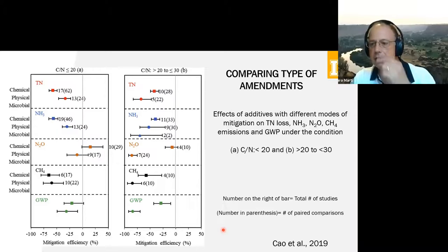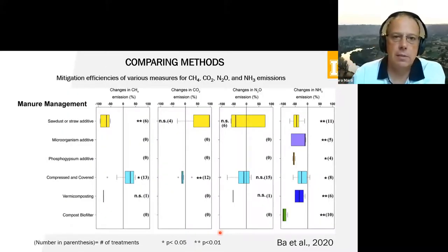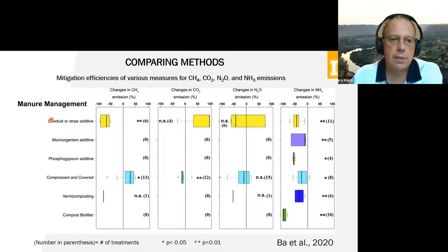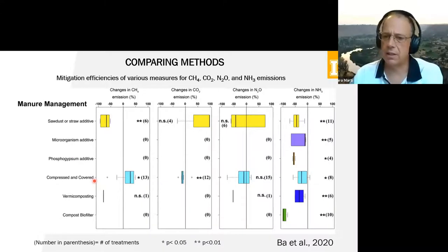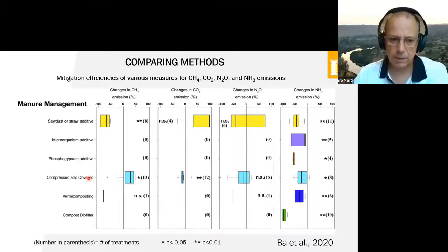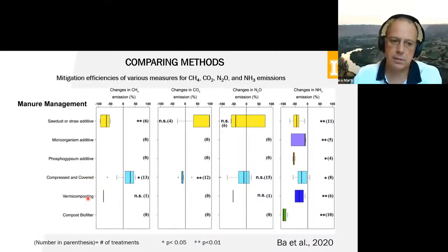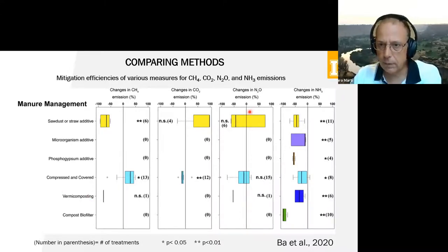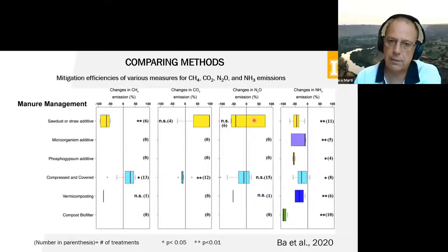What approach you choose depends on your objective. Ba et al. also did a meta-analysis comparing several composting methods — adding carbon, microorganisms, gypsum, compressing or covering the compost — as well as vermicomposting and biofilters. Most of them, except where gas swaps occur, have some positive effect on emissions reduction.